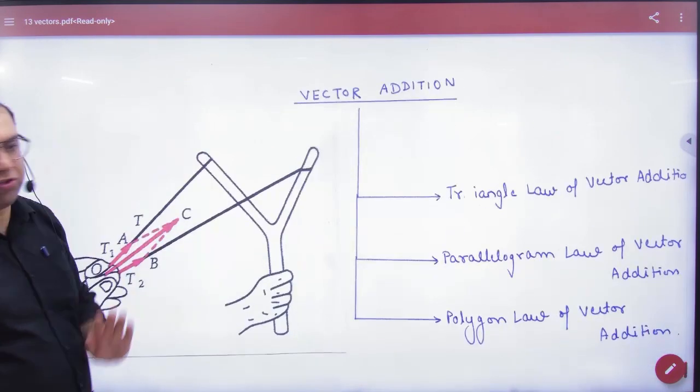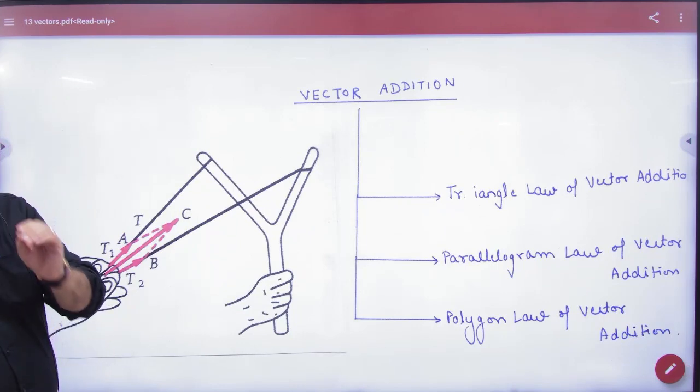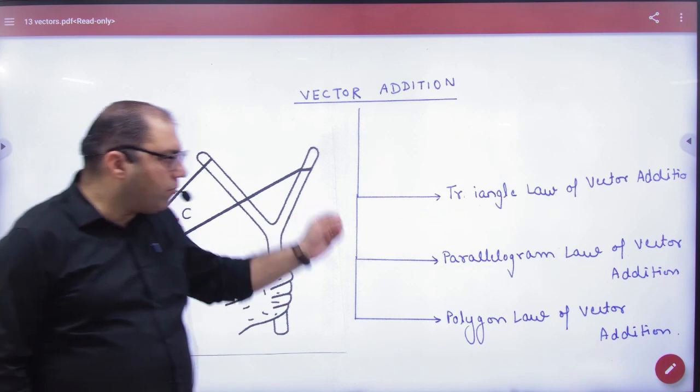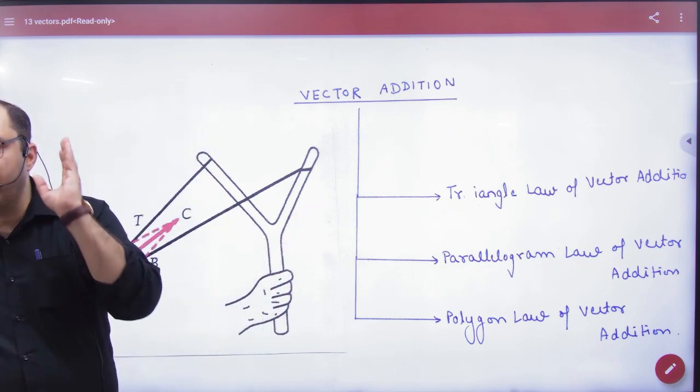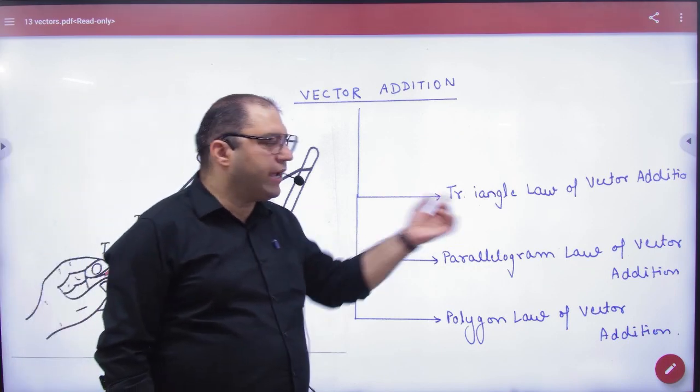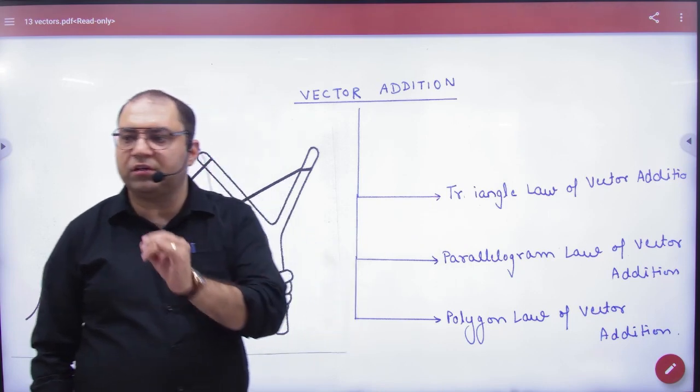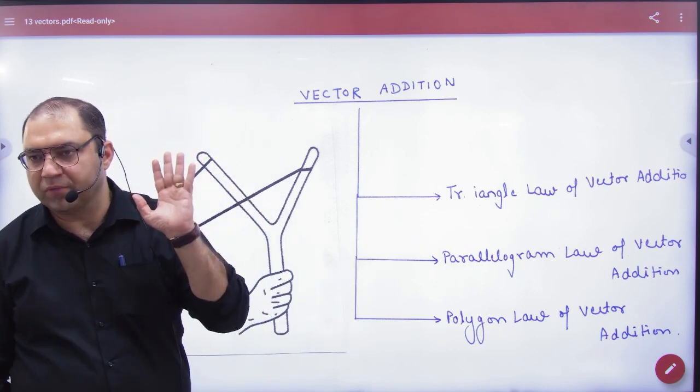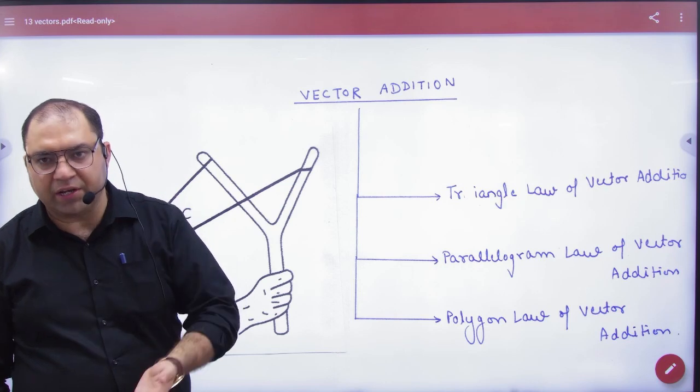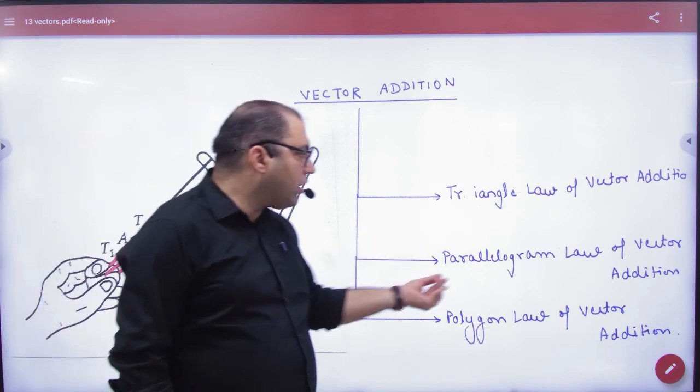Vector addition: only two vectors. If you have to add to that, you can add with the help of a law which is known as triangle law of vector addition, or if you don't use it, then parallelogram law of vector addition.